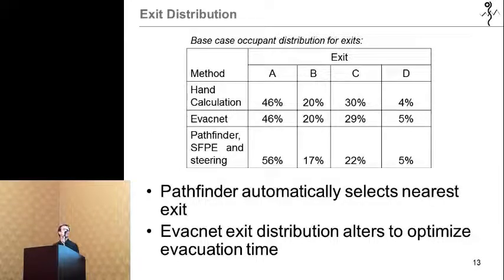Here you see the exit distribution for the different methods. What can be noted is exit A, which is the assembly area that leads directly to the outside, has a higher use for Pathfinder. This is due to the fact that occupants use the closest exit, therefore they are less willing to use the corridor areas. It's also noted that EvacNet distributes the occupants to optimize evacuation time, therefore these values are actually changed for different model scenarios. For example, exit A varies from 44% to 53% during the different models, while Pathfinder continues the same occupant usage.